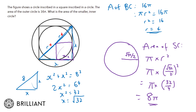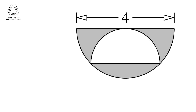That leads us to our ultimate question, which comes from the recent intermediate math challenge. Pause the video, draw some radiuses, and see what you can do. In this case it's a little trickier to see where the radiuses fit in. We have a bigger semicircle where the diameter is 4, which means the radius is 2. I'm going to draw this radius in — what we're trying to find is the shaded area. This length is also 2.